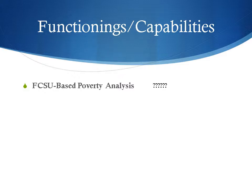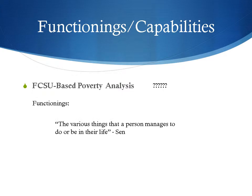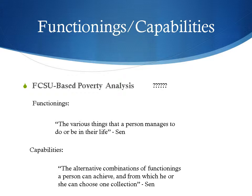The first important terms we need to establish are functionings and capabilities, which form the core of how we believe poverty should be approached. Functionings, as defined by Amartya Sen, are the various things that a person manages to do or be in their life, whereas capabilities are the alternative combinations of functionings a person can achieve and from which he or she can choose one collection. The capabilities approach allows for a more direct view of what the OPM and SPM are really trying to measure than through income — what that income allows a person to do or be.